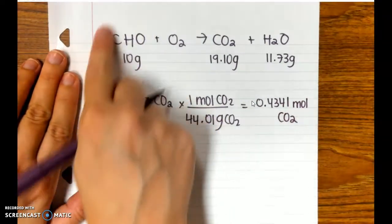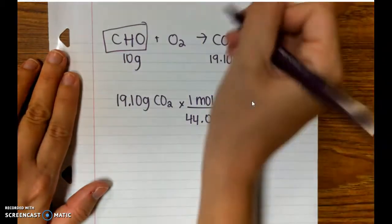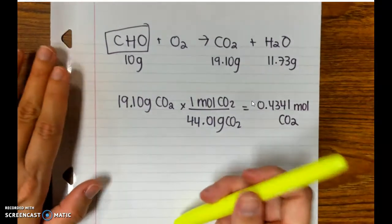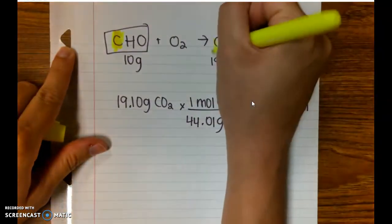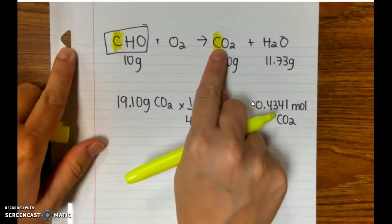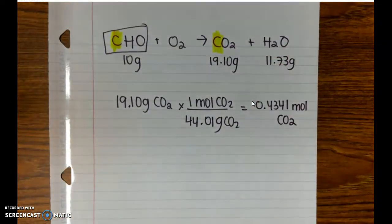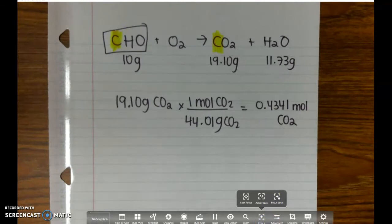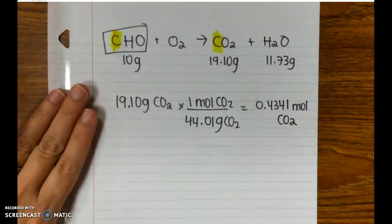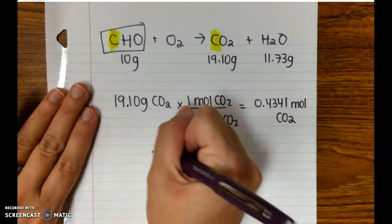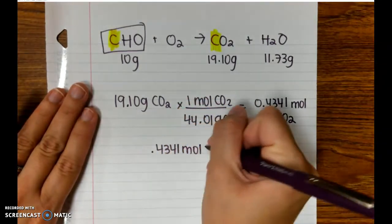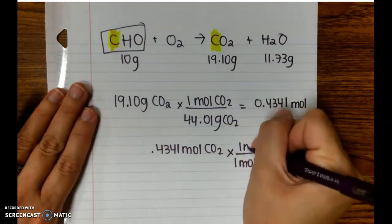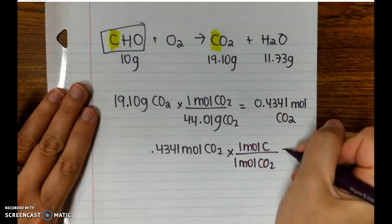When I look back at my original hydrocarbon, I want to find how many moles of carbon were made, because all of the carbon went to CO2. It couldn't go to water because water doesn't have carbon in it. So I can figure out how many moles of carbon atoms were in the original sample. I made this many moles of CO2, and every one molecule or mole of CO2 will have one mole of carbon atoms in them.